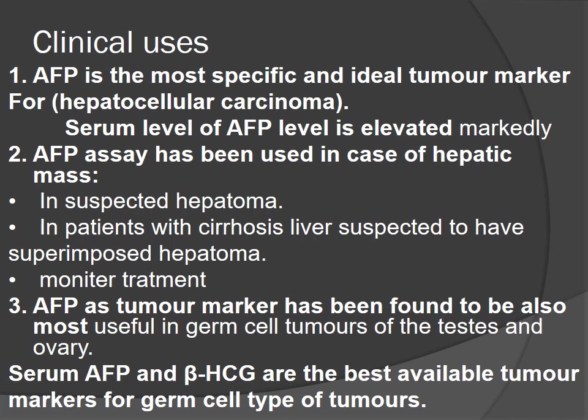Clinical uses of AFP: AFP is the most specific and ideal tumor marker for hepatocellular carcinoma, with serum levels markedly elevated. AFP assay has been used in cases of hepatic metastasis and is useful in suspected hepatoma, including patients with cirrhotic liver suspected to have superimposed hepatoma. AFP has also been found most useful in germ cell tumors of the testis and ovary. Serum AFP and beta-HCG together are the best available tumor markers for germ cell tumors.